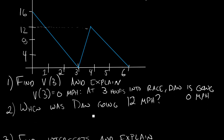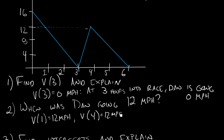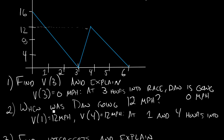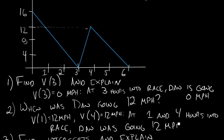In math notation: V of 1 equals 12 miles per hour, and V of 4 equals 12 miles per hour. An input of 1 gives an output of 12, and an input of 4 gives an output of 12. And then we can also just write the story: at 1 and 4 hours into the race, Dan was going 12 miles per hour.